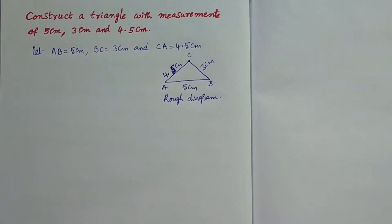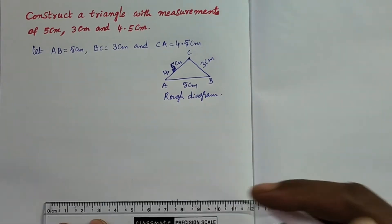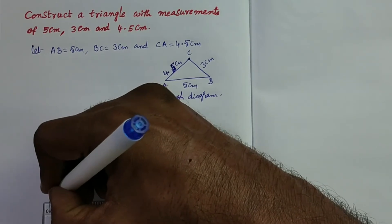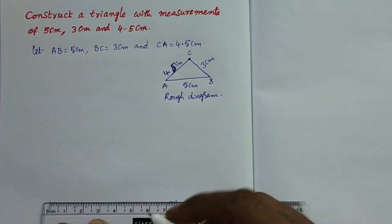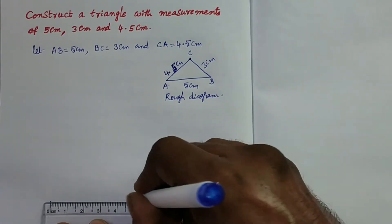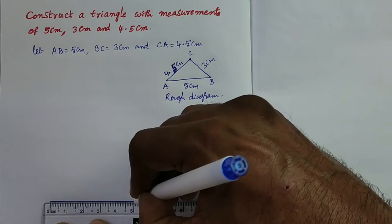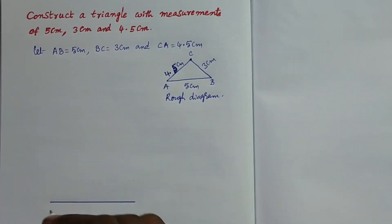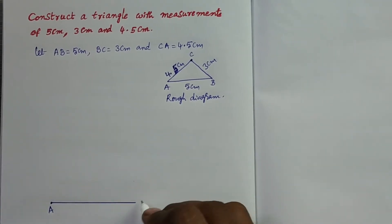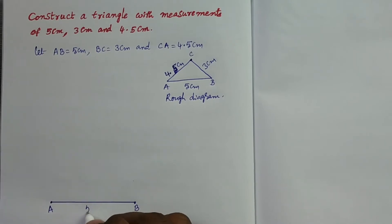Let us construct the original diagram. Take a scale, take a point at 0 and another point at 5 cm, and join these two points. This line segment is 5 cm. Take this point as A and this point as B, so this length is 5 cm.